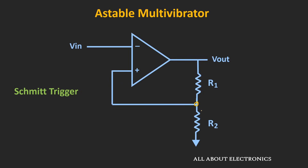In the Schmitt trigger, a fraction of the output voltage is given as feedback to the non-inverting terminal. Because of this positive feedback, the output should continuously grow, but as you know, the output cannot grow continuously — it will get restricted by the supply voltages. So let's say initially the output is equal to positive saturation voltage. The fraction of this output voltage fed back to the non-inverting terminal is equal to R2 divided by (R1 + R2) times Vsat, or βVsat, where β is the feedback fraction. If the input voltage Vin is less than βVsat, the output will remain at positive saturation.